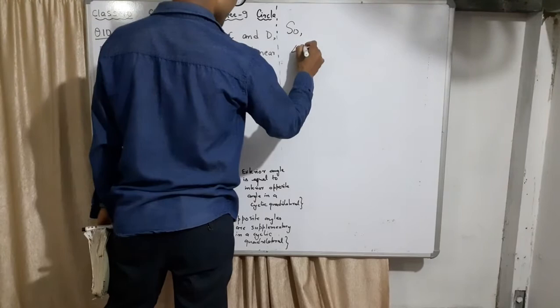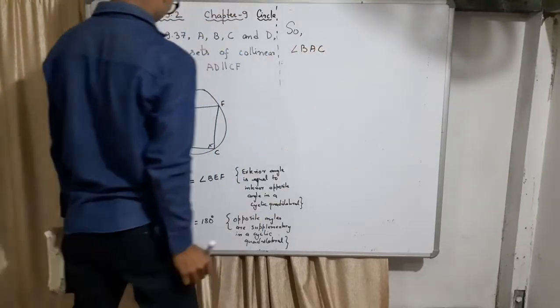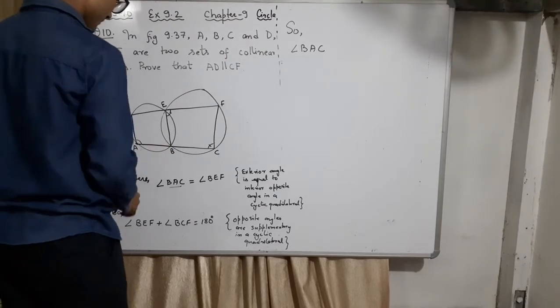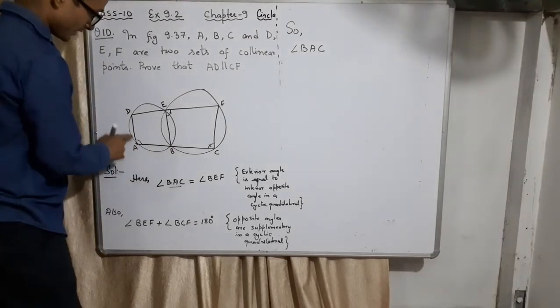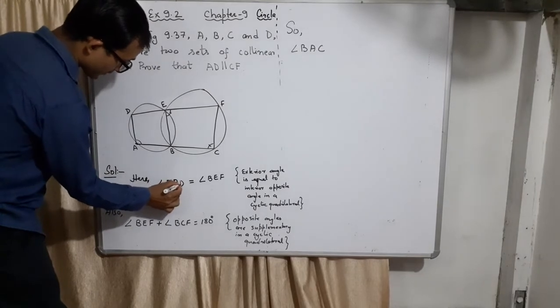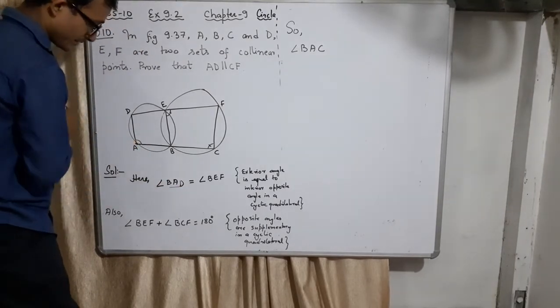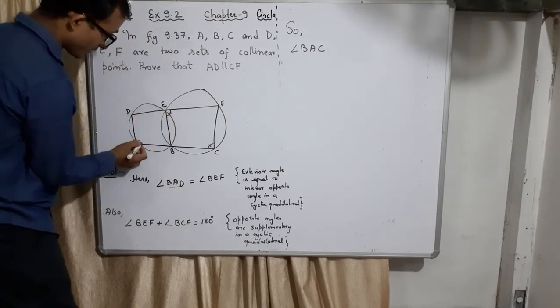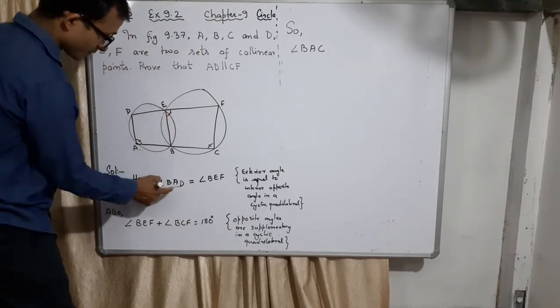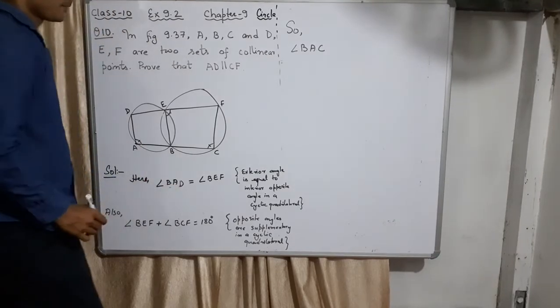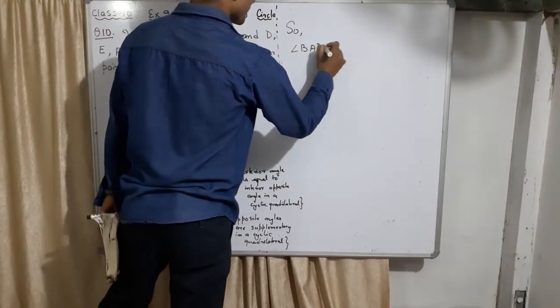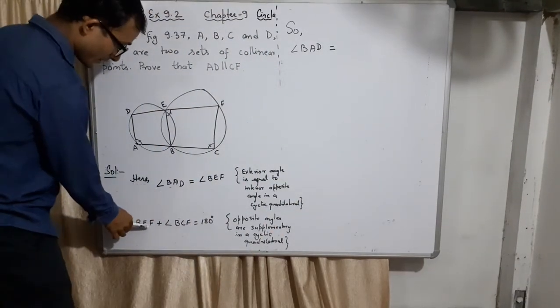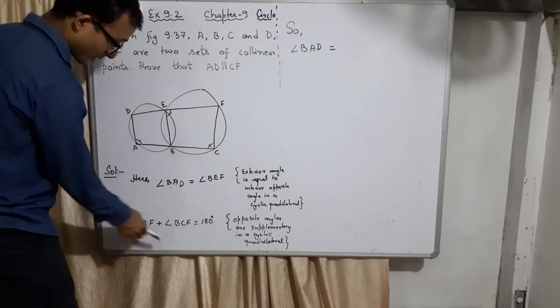Angle BAC is not, wait - BAD. This should be BAD. Okay, BAD, right? No confusion. BAD was equal to this, equal to this angle. I was talking about this angle but mistakenly I have written here. So this is BAD is equal to... In place of BEF, I replace BAD here. Okay, this equation I am rewriting.